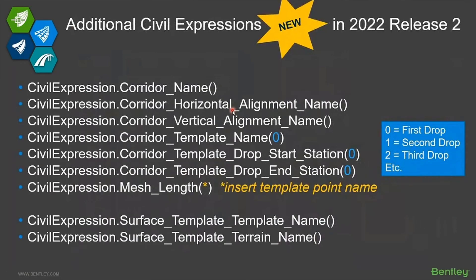I want to introduce something brand new here. If you were on the coffee corner last week you may have seen a brief mention of this from Derek. There are some new expressions added to the very soon to be released 2022 Release 2 software that will allow you to get corridor and surface template information, so you can put these on your mesh elements and they will return information from that corridor — the name of the corridor, the horizontal and vertical alignment names that created it, and the template drop that was used.